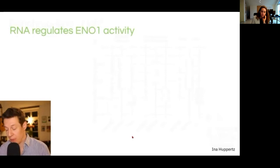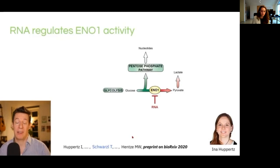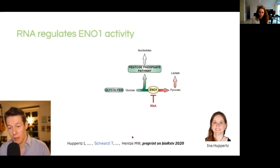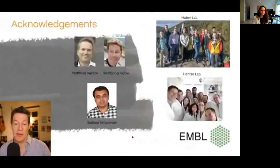We used this package in our recent studies. One of them is now in bioRxiv, done by Ino Hupperts, where we can nicely show that when Enolase 1 — a metabolic enzyme — is binding to RNA, the enzymatic activity is actually inhibited. I hope I could give you a short overview of DUSIC and RNA binding proteins.